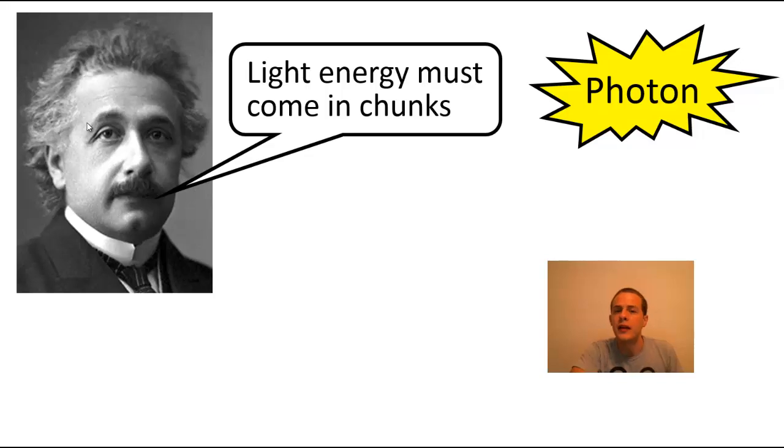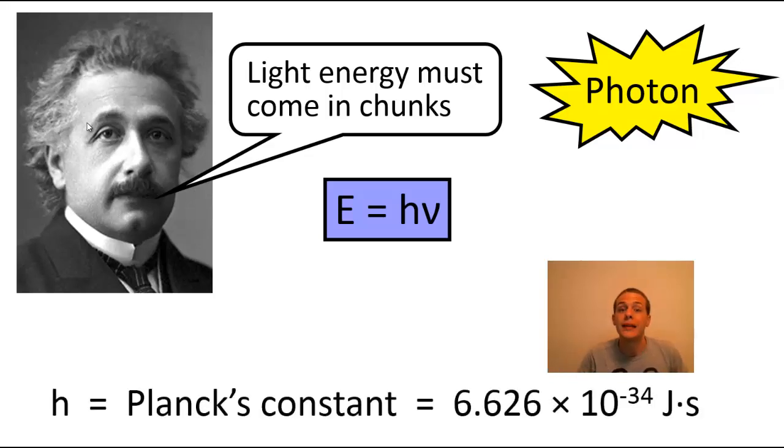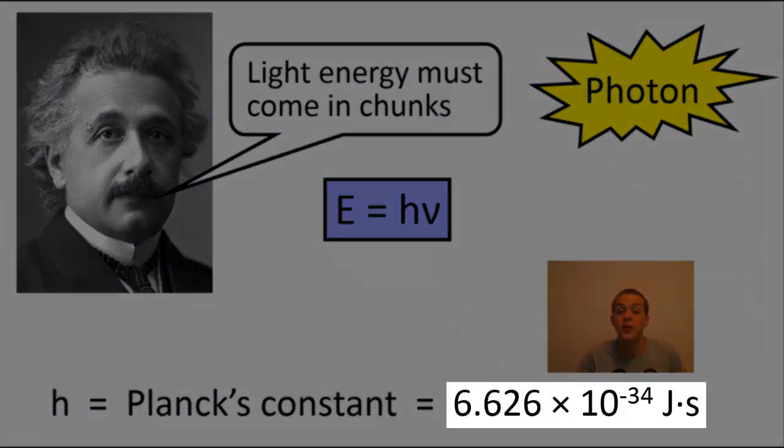And the amount of energy in a photon of light is given by this equation here: E equals h times nu, where nu, of course, is the frequency of the light, E is the energy of the photon, and h is what we call Planck's constant, which has the value 6.626 times 10 to the minus 34 joules times seconds.